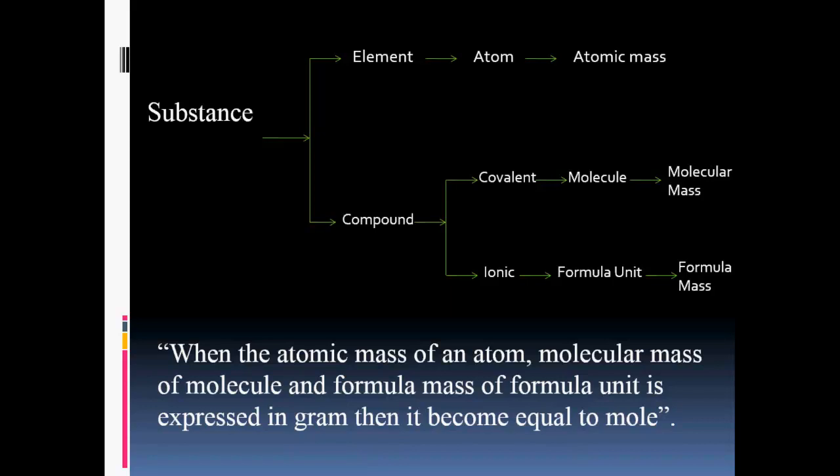Substance may be elements and compounds. The smallest unit of element is atom, and the mass of atom is expressed in atomic mass. While compounds may be covalent compound and ionic compound. The smallest unit of covalent compound is molecule whose mass is expressed in terms of molecular mass, while that of the smallest unit of ionic compound is formula unit and its mass is represented in terms of formula mass.